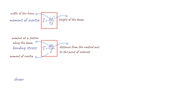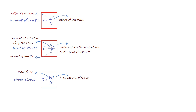Moving on, we have the formula for shear stress in a beam. This is represented by the equation where V is the shear force at a section along the beam, Q is the first moment of the area of the cross-section about the neutral axis, and I is the torsional constant of the beam. This formula is used to calculate the amount of stress a beam can withstand in a shear load.